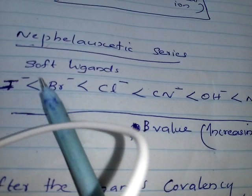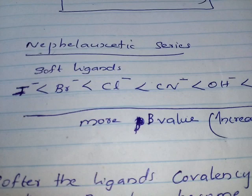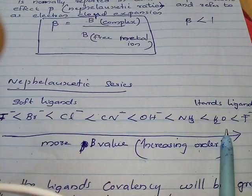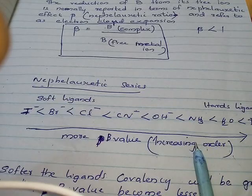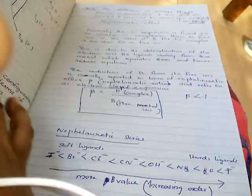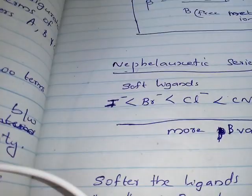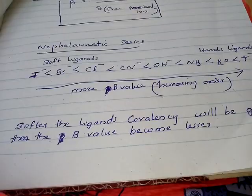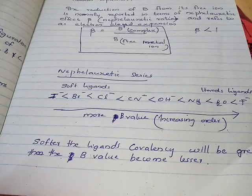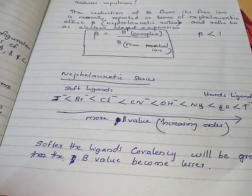The nephelauxetic series in increasing order of B value is: soft ligands such as I⁻, Br⁻, Cl⁻, CN⁻ have lower B values, while hard ligands have higher B values. Soft ligands show greater covalency, and because of this greater covalency the B value becomes lesser. Hard ligands show less covalency and a higher B value. This is the increasing order of the nephelauxetic series.